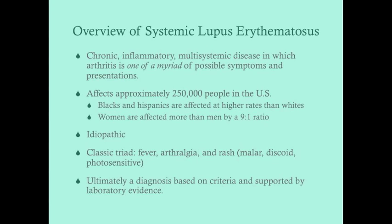Lupus is relatively rare but common enough to warrant attention. Approximately 250,000 people are affected in the US. Blacks and Hispanics are affected more than whites, and women are affected more than men by a nine-to-one ratio, making this primarily a female disorder. The cause is considered part genetics, part environmental, but it's really idiopathic — we don't know exactly what causes it, though we do know it is an autoimmune disorder.